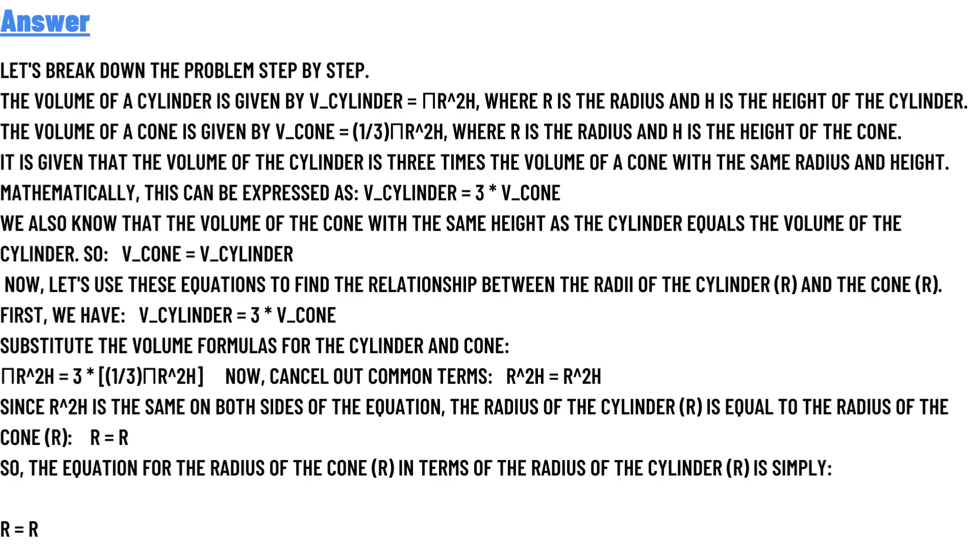Let's break down the problem step by step. The volume of the cylinder is given by V = πr²h, where r is the radius and h is the height of the cylinder. The volume of the cone is given by V = (1/3)πr²h, where r is the radius and h is the height of the cone. It is given that the volume of the cylinder is three times the volume of the cone with the same radius.